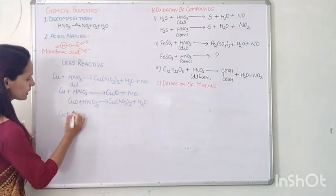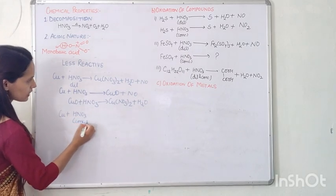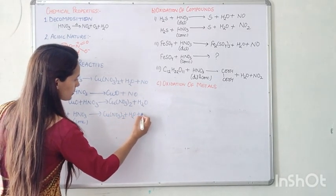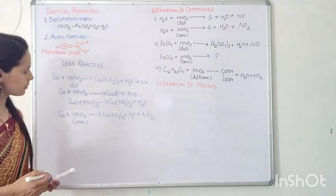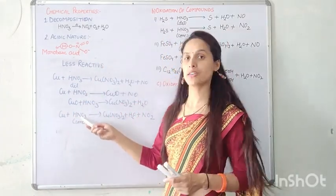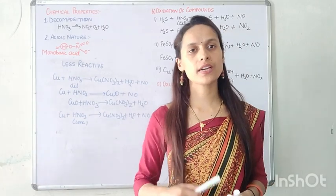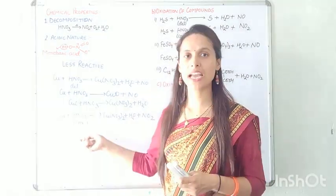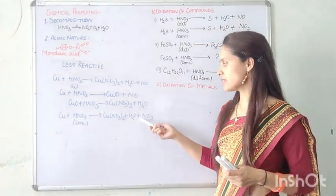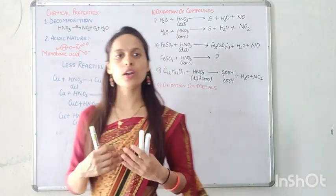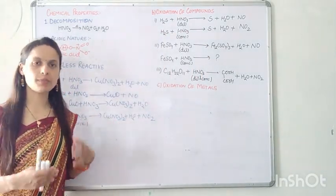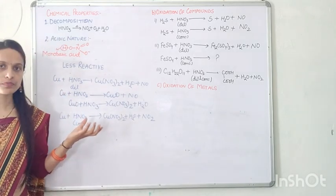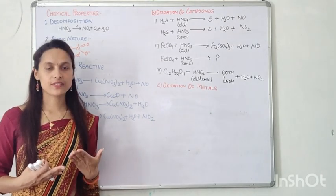With concentrated HNO3, copper forms Cu(NO3)2 + H2O + NO2. Similarly, silver reacts with concentrated HNO3 to form AgNO3 + H2O + NO2, and mercury reacts to form Hg(NO3)2 + H2O + NO2.